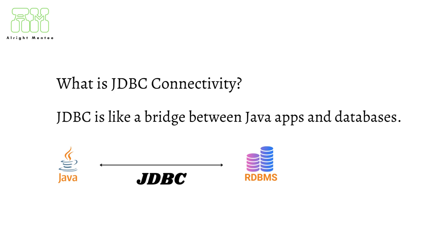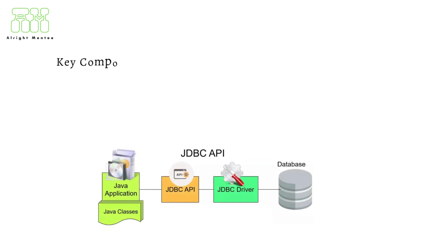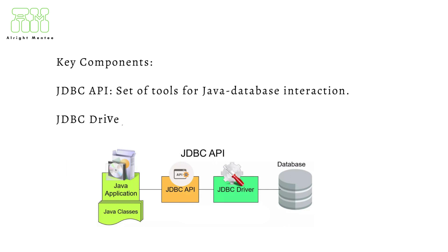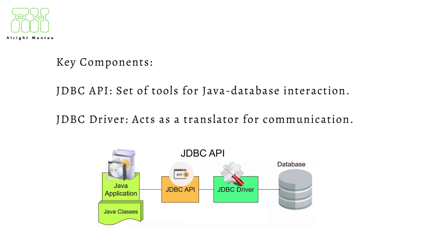So they can exchange information smoothly. Now let's understand the key parts of JDBC connectivity. First, the JDBC API — this is a set of ready-made tools that Java provides. These tools tell your Java program how to talk to the database, like what to say and how to listen.